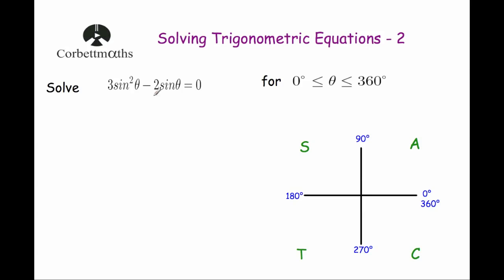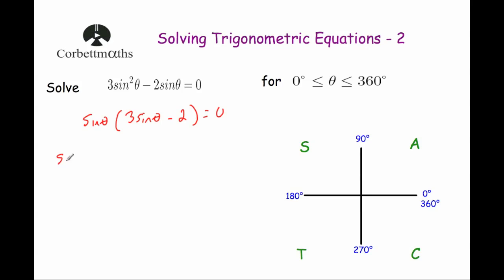Our next question: solve 3 sine squared β minus 2 sine β equals zero, for angles between 0 and 360 degrees. This looks like a quadratic — similar to 3x squared minus 2x equals zero. We factorize by taking sine β out as a common factor, giving sine β times the bracket 3 sine β minus 2 equals zero. Since two things multiply to give zero, either sine β equals zero or 3 sine β minus 2 equals zero.